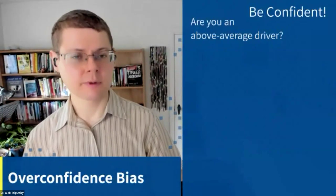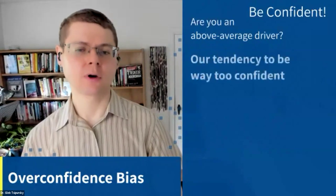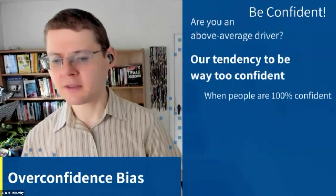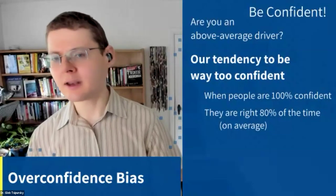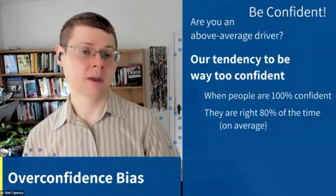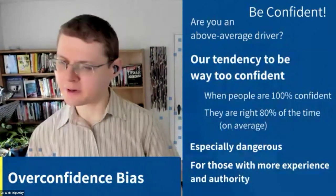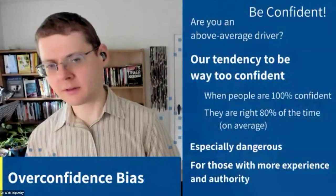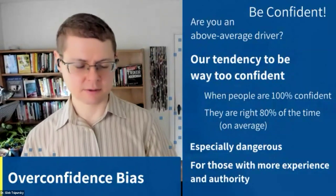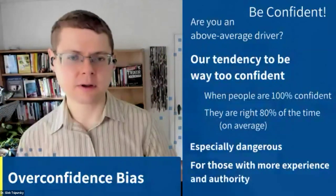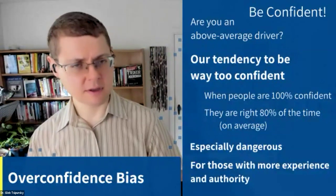When we judge ourselves or when we evaluate other people, we have an implicit bias to be overconfident about our judgments. When people say they're 100% confident, they're only right 80% of the time. You bet the house, you bet the farm, you bet your practice — you're only going to be right 80% of the time on average. This is especially dangerous for those with more experience and authority. There was a study done on medical doctors — senior doctors who were over 10 years out of medical school versus freshly minted doctors who were just out of medical school. They were given a case study to evaluate and a course of treatment to recommend, and they got the case and treatment right at about the same rate.